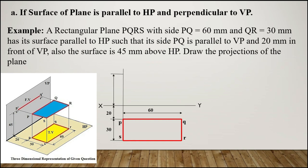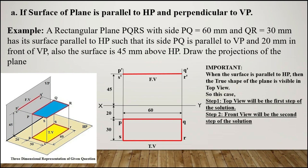Now move towards the front view. The plane is 45 mm above HP, so the front view will be 45 mm above the XY line. Take a projector — this is your front view. Naming it: on one side you will have P-dash and S-dash, and on the other side Q-dash and R-dash. Important note: when the surface is parallel to HP, the true shape is visible in the top view, so the top view is drawn as the first step and the front view as the second step.